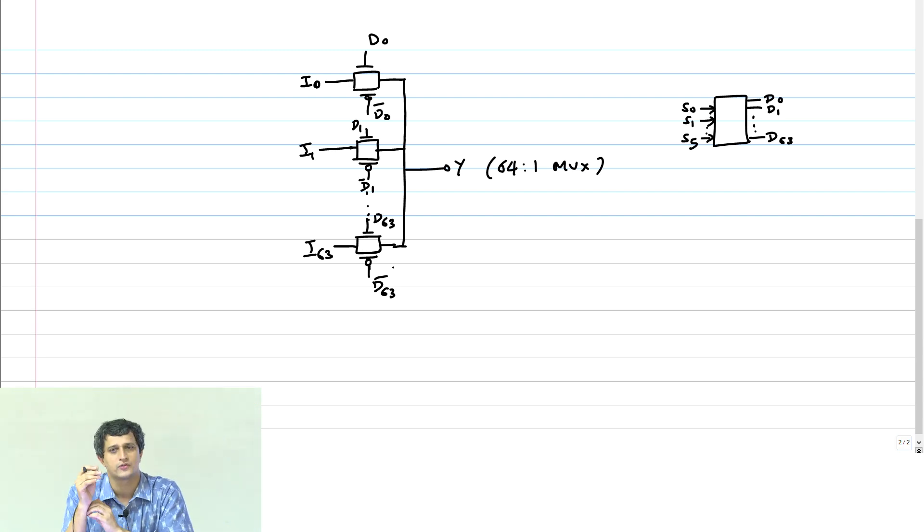The only problem with this style of circuit is if I ask you what is the drive strength of this multiplexer, what is the answer? What is the drive strength? If I have an inverter unit inverter, then I say the drive strength is 1, 1x. If I have a unit NAND gate, the drive strength is 1 again. You know we have sized it like that. Now if I ask you what is the drive strength of this transmission gate based multiplexer, what is it?